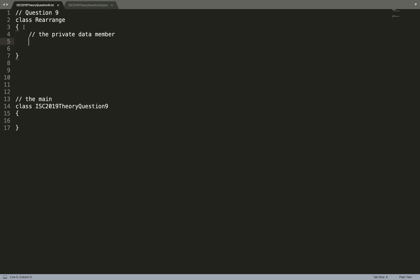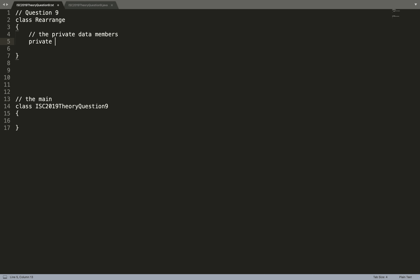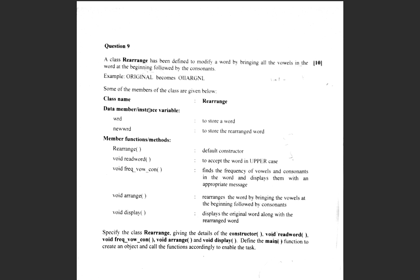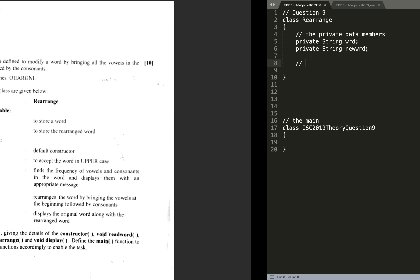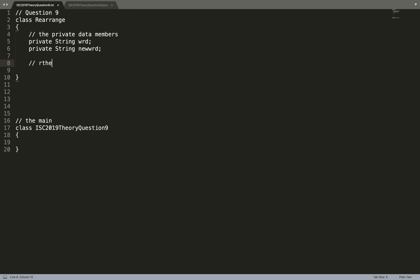Let's start with class Rearrange. The private data members are 'wrd' and 'newWrd', so: private String wrd and private String newWrd. I always tell you to keep the name of the private instance members exactly as given in the question. So 'wrd' is the name of the word and 'newWrd' is the name of the rearranged word.